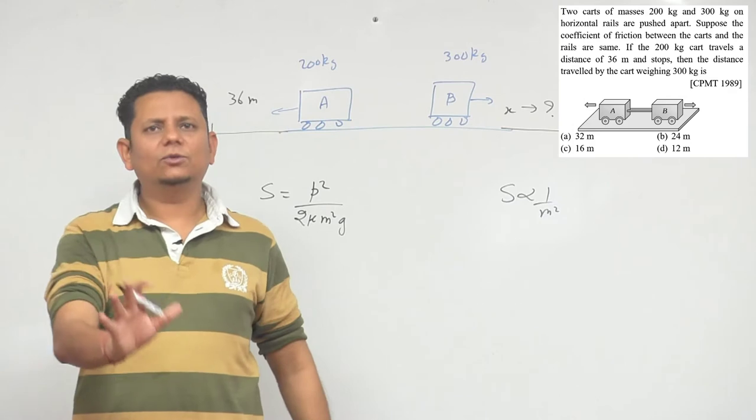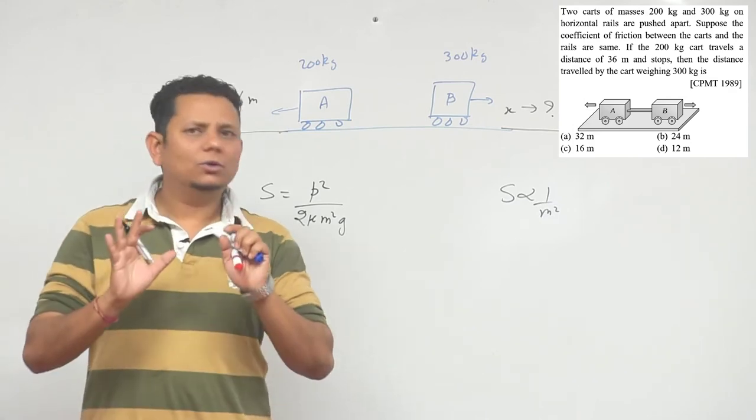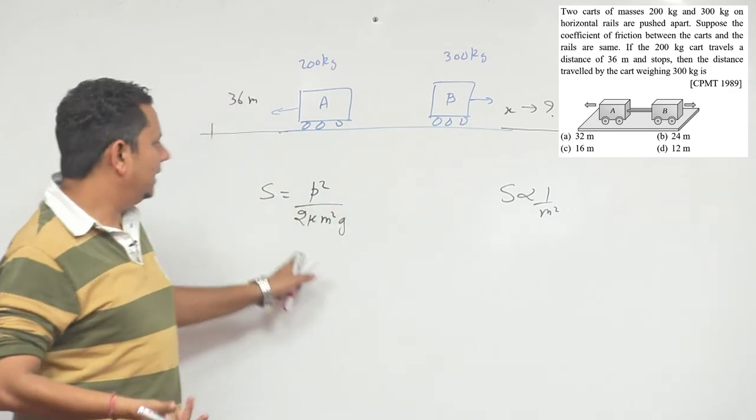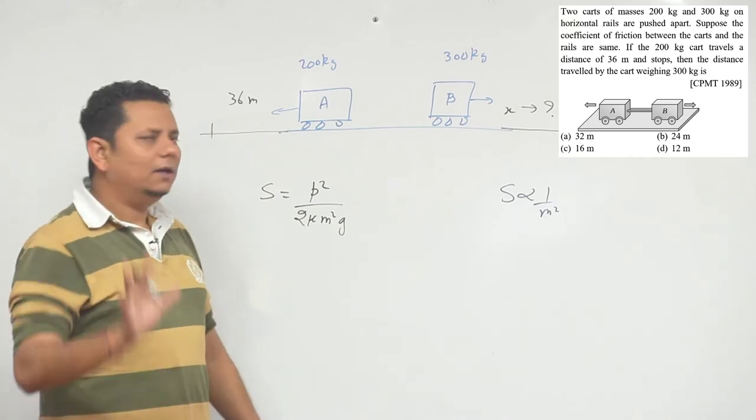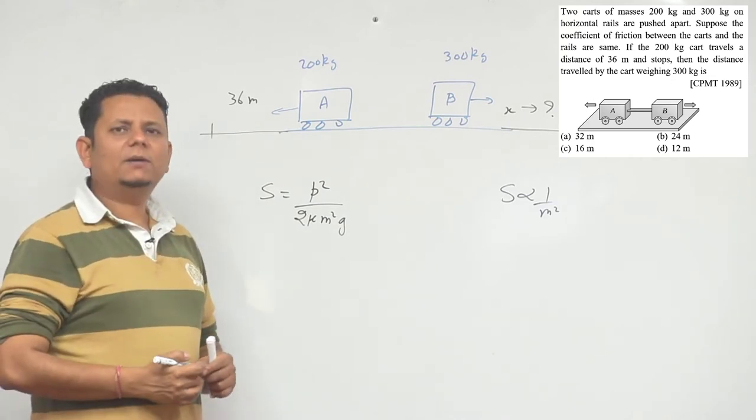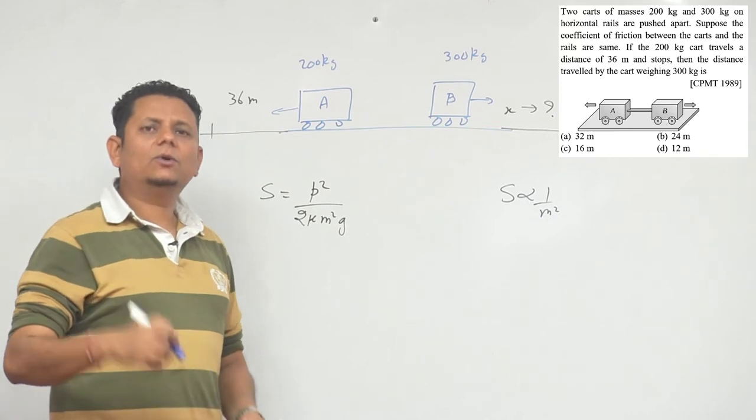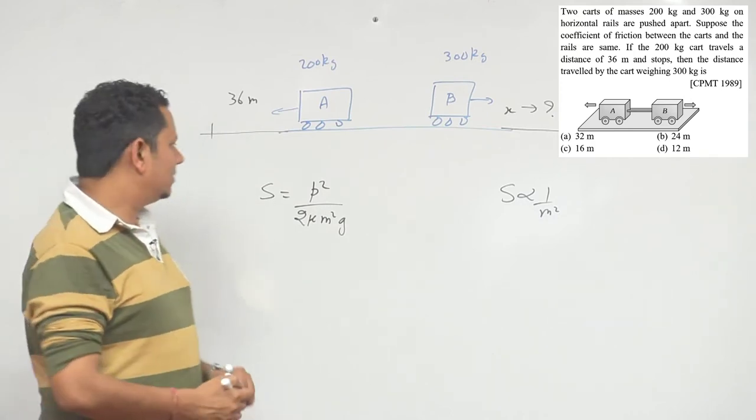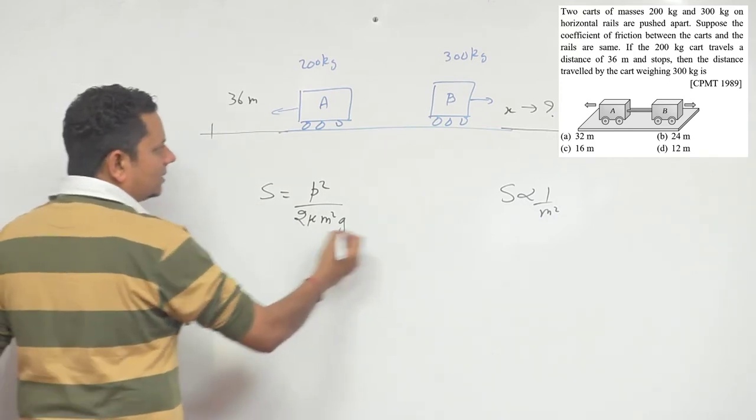In the question it's not clear whether both have equal momentum. So we should apply it or not, that's a separate part. But suppose if we can apply this, one more line should be added here that both have the same momentum. If in that case momentum is same, then the solution will be s is proportional to one by m square.